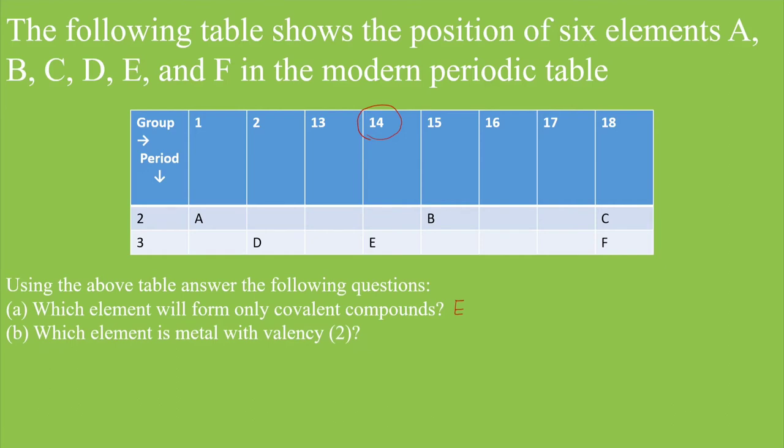Now, second one, which element is metal with valency 2? It means you need to find out metal and its valency should be 2. Children, with the help of group number, we can easily find out the valency. For example, group 1 elements, they have valency 1. Similarly, group 2 elements, their valency is 2. Group 13, their valency is 3. Group 14, valency is 4. 15th group valency, again 3. 16th group valency 2, 17, 1, and 18, 0.